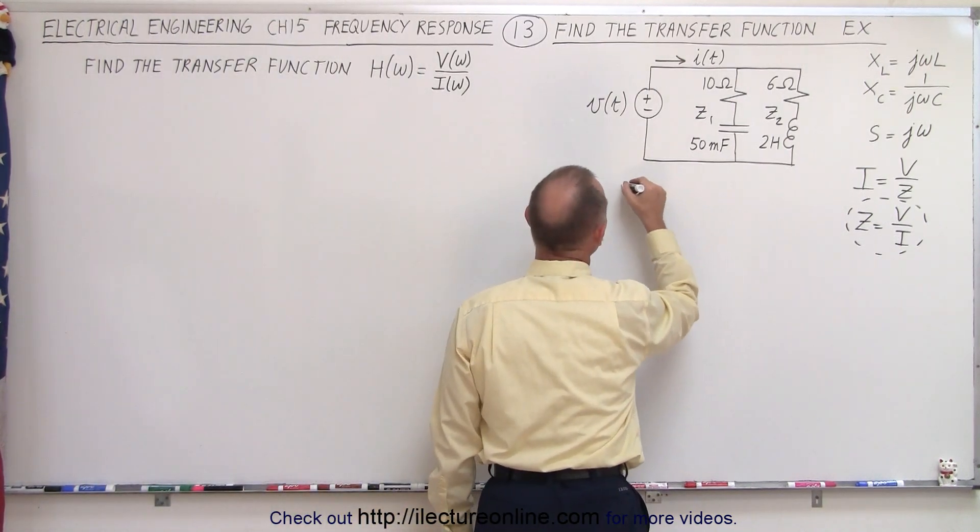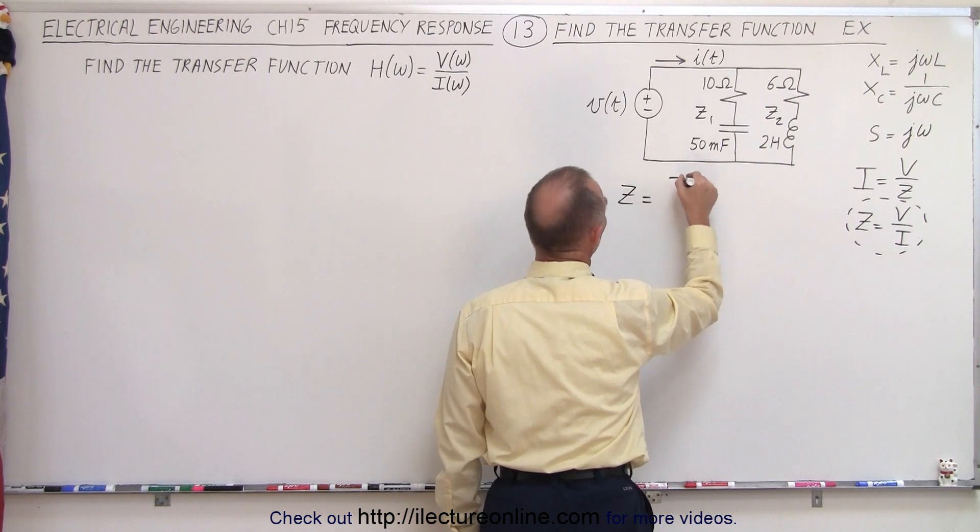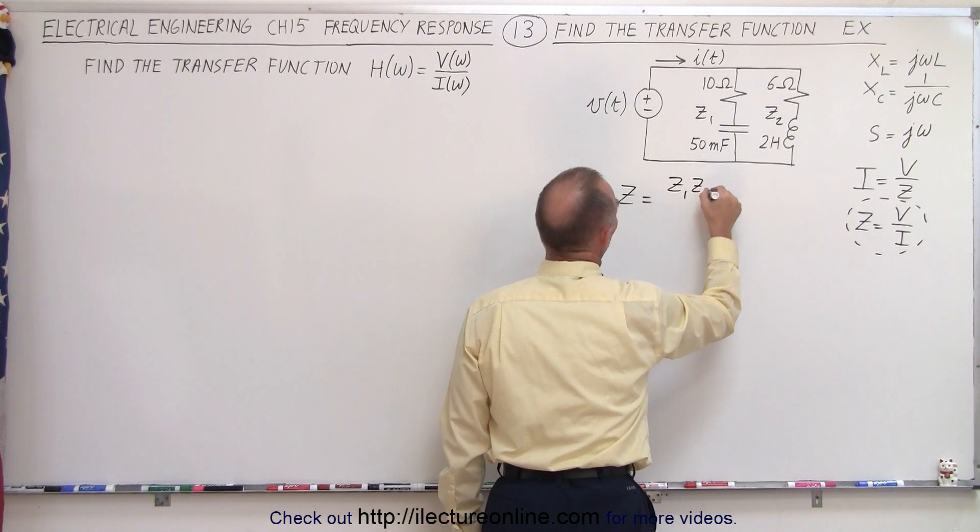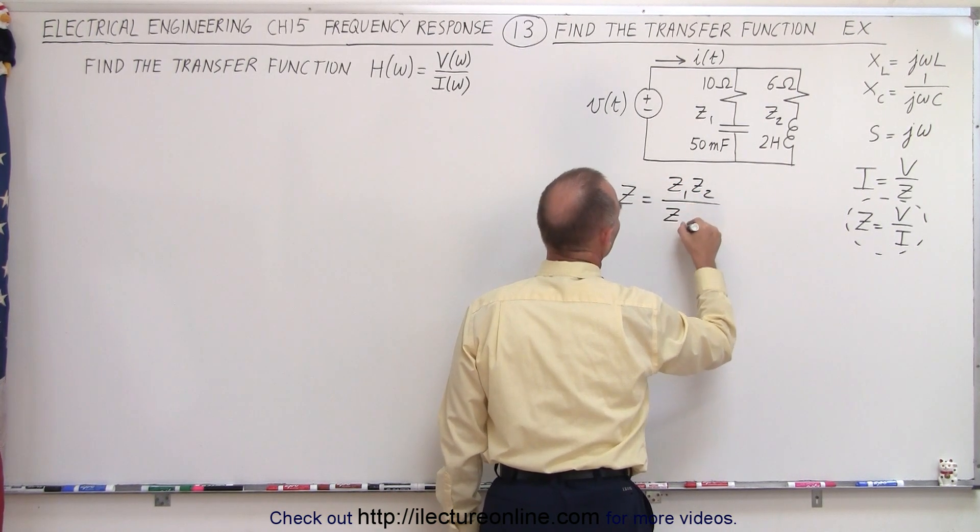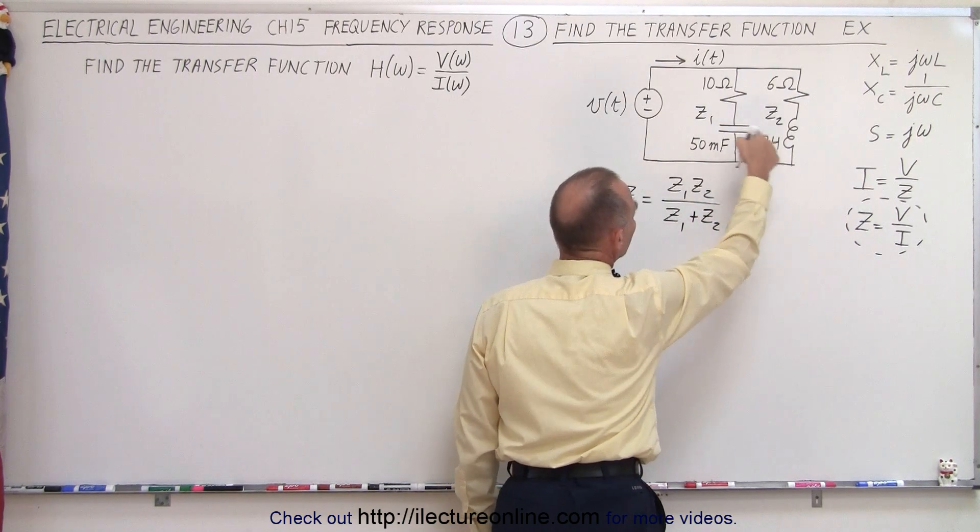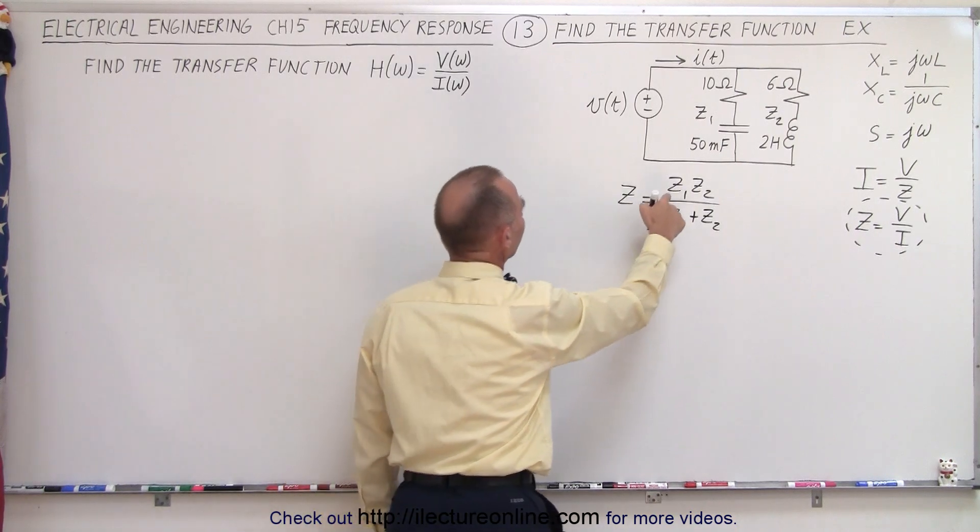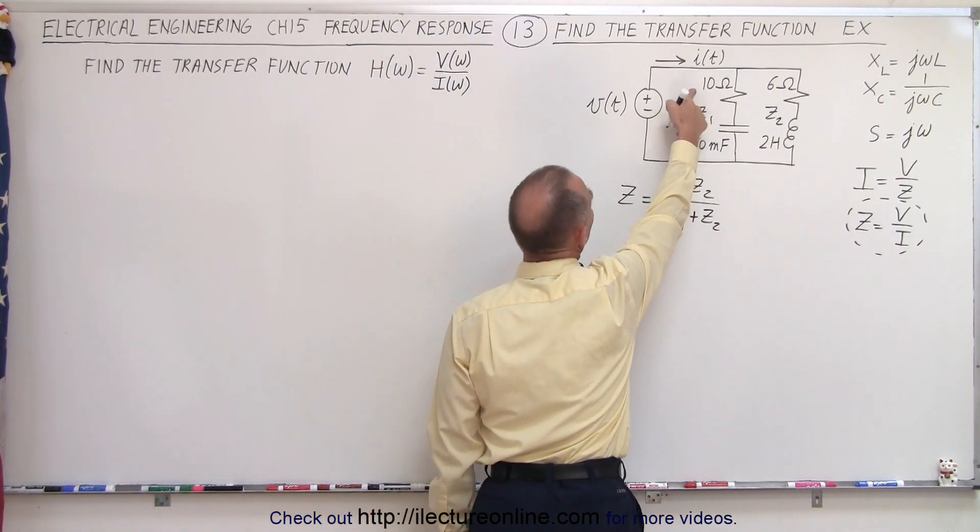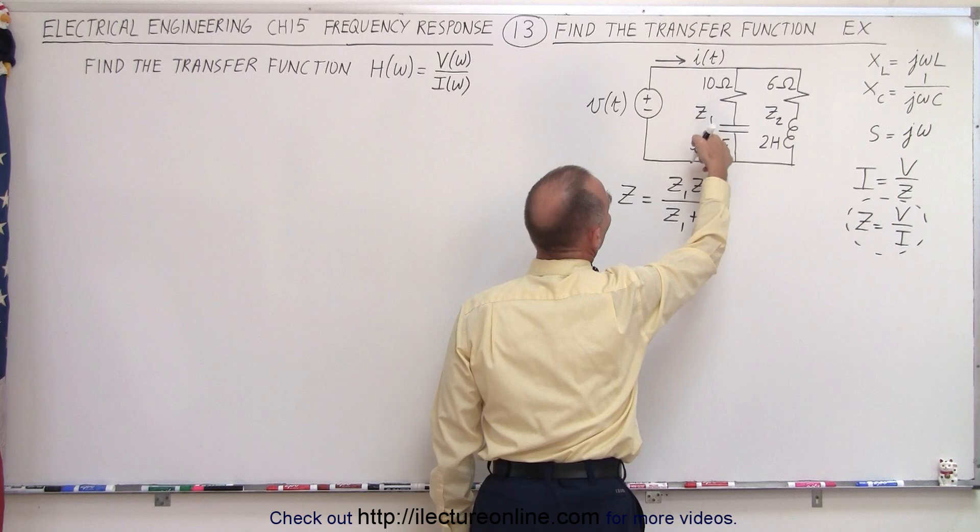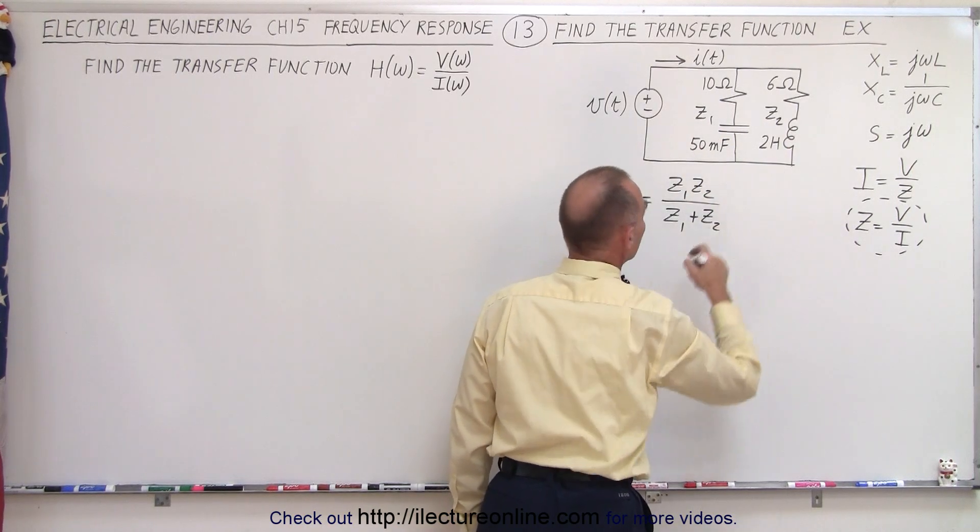So, we know that the total impedance is going to be equal to the product over the sum, because we have two branches in parallel right here. So, impedance 1, Z1 is going to be the resistance plus the capacitance.